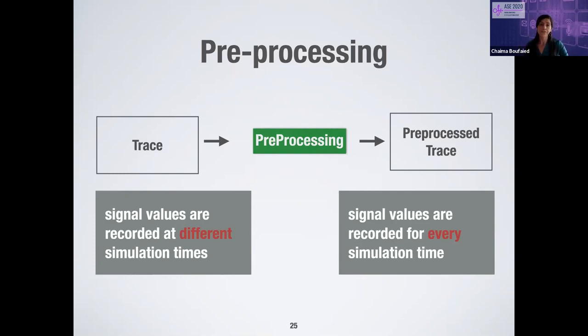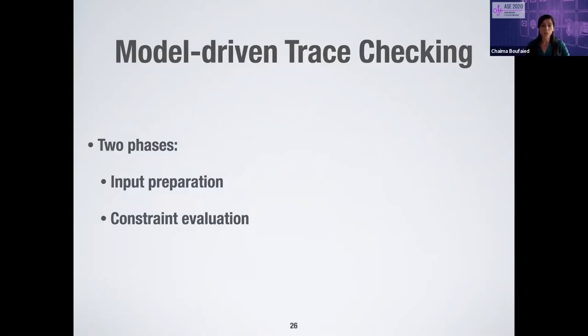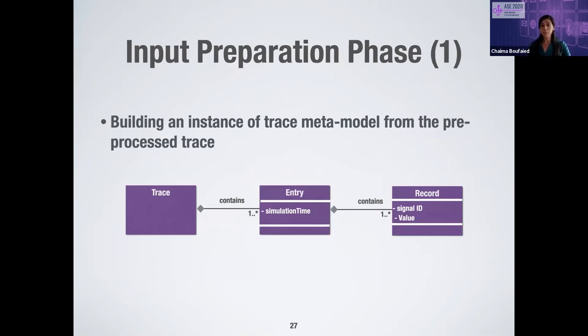Our model-driven trace checking is based on two phases: input preparation and constraint evaluation. For the input preparation, we first build an instance of the trace metamodel from the pre-processed trace. The trace metamodel is simple: a trace contains one or more entries of type Entry, each entry has a simulation time attribute (our timestamp), and each entry contains one or more records of type Record. Each record has the signal ID and the signal value at that specific simulation time.